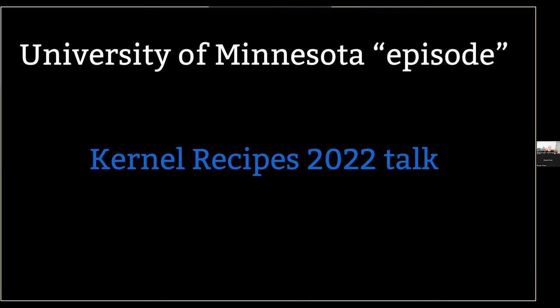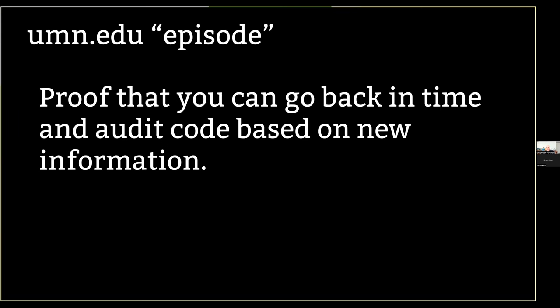The process has put more onus on researchers — they have to work more in the public eye. They can't work privately. They can't try to slip stuff into the kernel without telling us what they're doing, which is good because we want to work publicly and together as a community. You don't do research on public communities without telling them. The episode proved that you can go back in time and audit code based on new information.